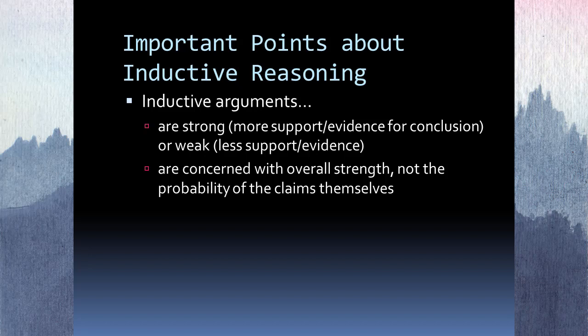A weak argument is one where you have less evidence and less support. Just as with soundness, there are cases on the margins where there's disagreement over whether an argument is weak or strong. For instance, an inductive argument for universal healthcare might be found very strong by a Democratic voter and not by a conservative voter. But there are also clear-cut cases — sometimes juries have an easy job because there's so much evidence that it would be ridiculous not to convict, and other times an argument is clearly so weak that you obviously can't convict.